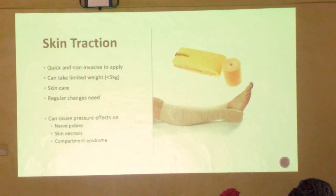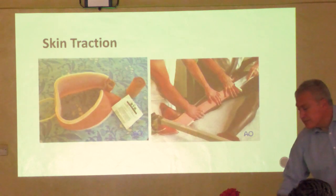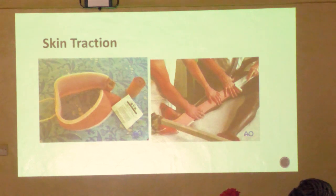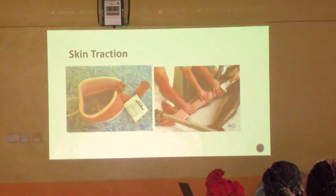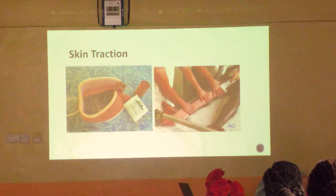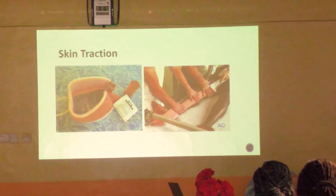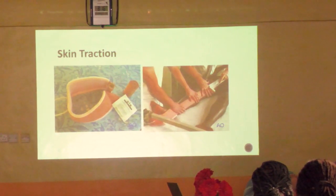You need to be meticulous about skin care because bad pressure effects can cause nerve palsies, skin ulcers, compartment syndrome, and deep vein thrombosis. This is one of the standard kits we use: the leg is cleaned, the sticky straps are applied to the leg, then bandaged on tightly but not too tightly. Pay particular attention to bony prominences - the malleoli of the ankle and the fibular head, where the common peroneal nerve runs. Bandage round-and-round rather than crisscross to reduce compression risk.